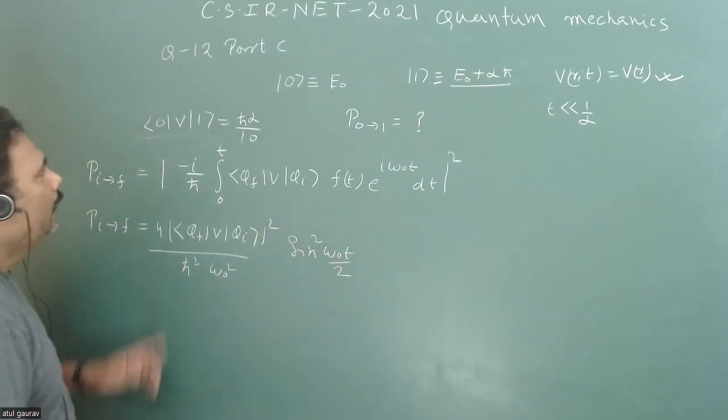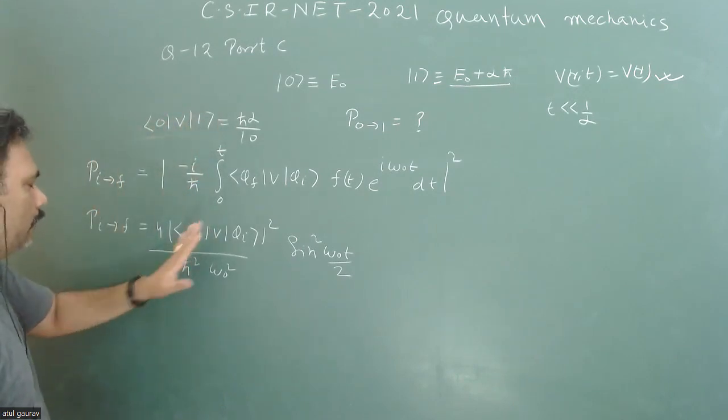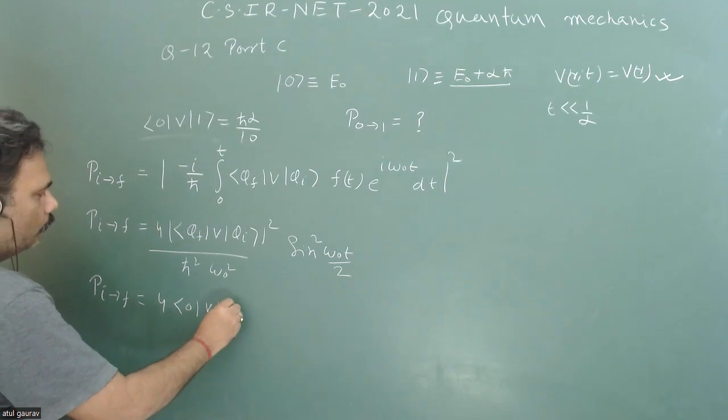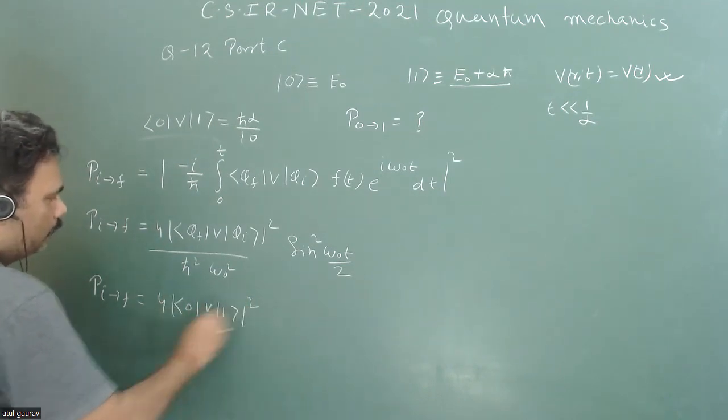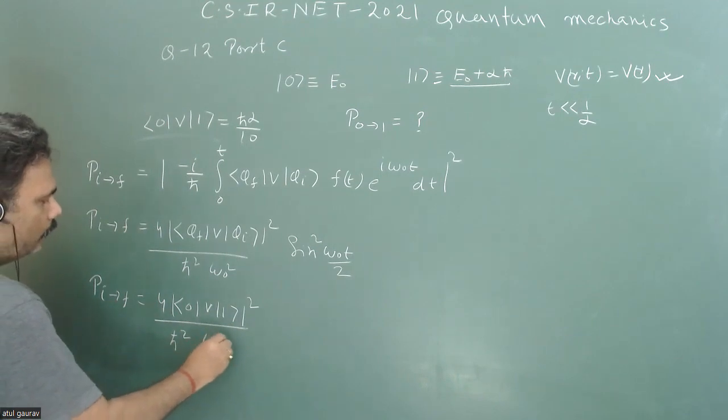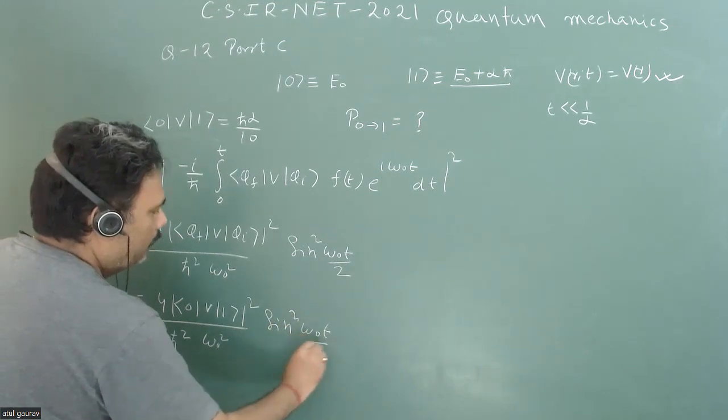This is the compact form. Here it is given ⟨0|V|1⟩, and it's a symmetric matrix, so ⟨1|V|0⟩ is the same thing. The formula reduces to P_if = 4|⟨0|V|1⟩|²/(ℏ²ω₀²) sin²(ω₀t/2).